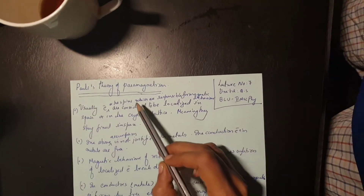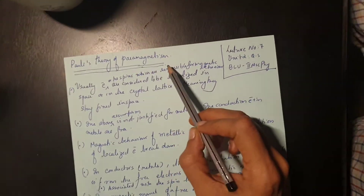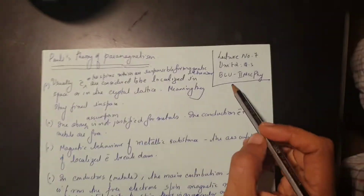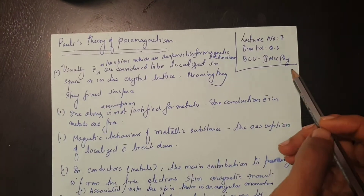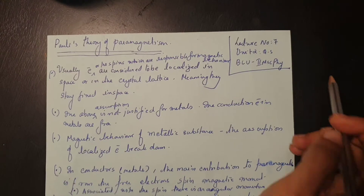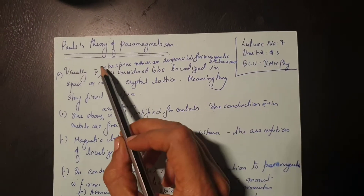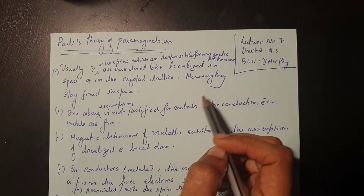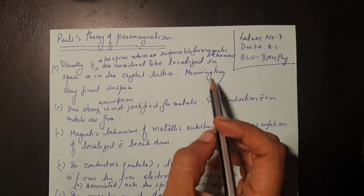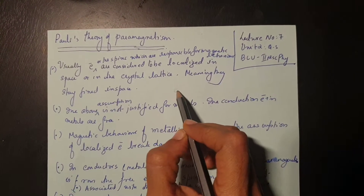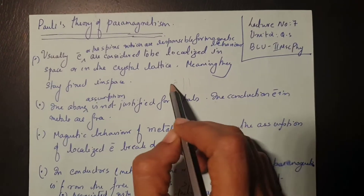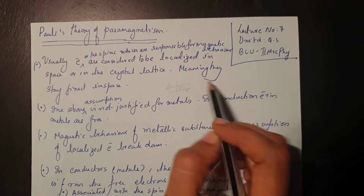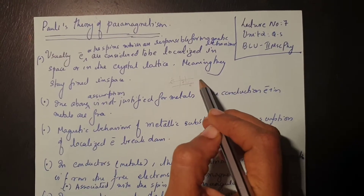Hello everyone, today we are going to see Pauli's theory of paramagnetism. This is lecture number 7, Unit 2, Quantum Statistics, according to your syllabus for second MSc Physics. Normally when we discuss paramagnetism, we consider that electrons are fixed in the crystal lattice, and when we apply a magnetic field the electrons orient in a certain direction — this is classical paramagnetism.